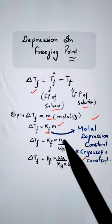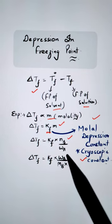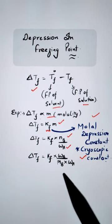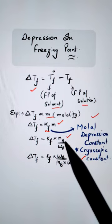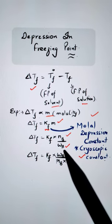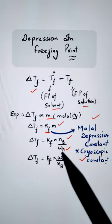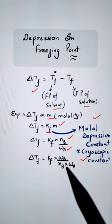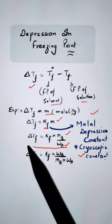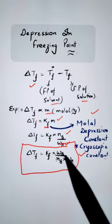Molality we know is equal to number of moles of solute divided by weight of solvent. Here we have represented B as the solute and A as the solvent. Number of moles is equal to given weight upon molar weight. So this is our required formula for depression in freezing point.